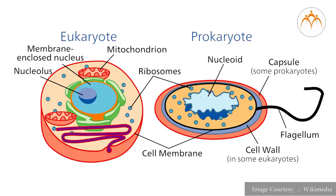There are mainly two types of cells: prokaryotic cells and eukaryotic cells. First, we will discuss about prokaryotic cells.